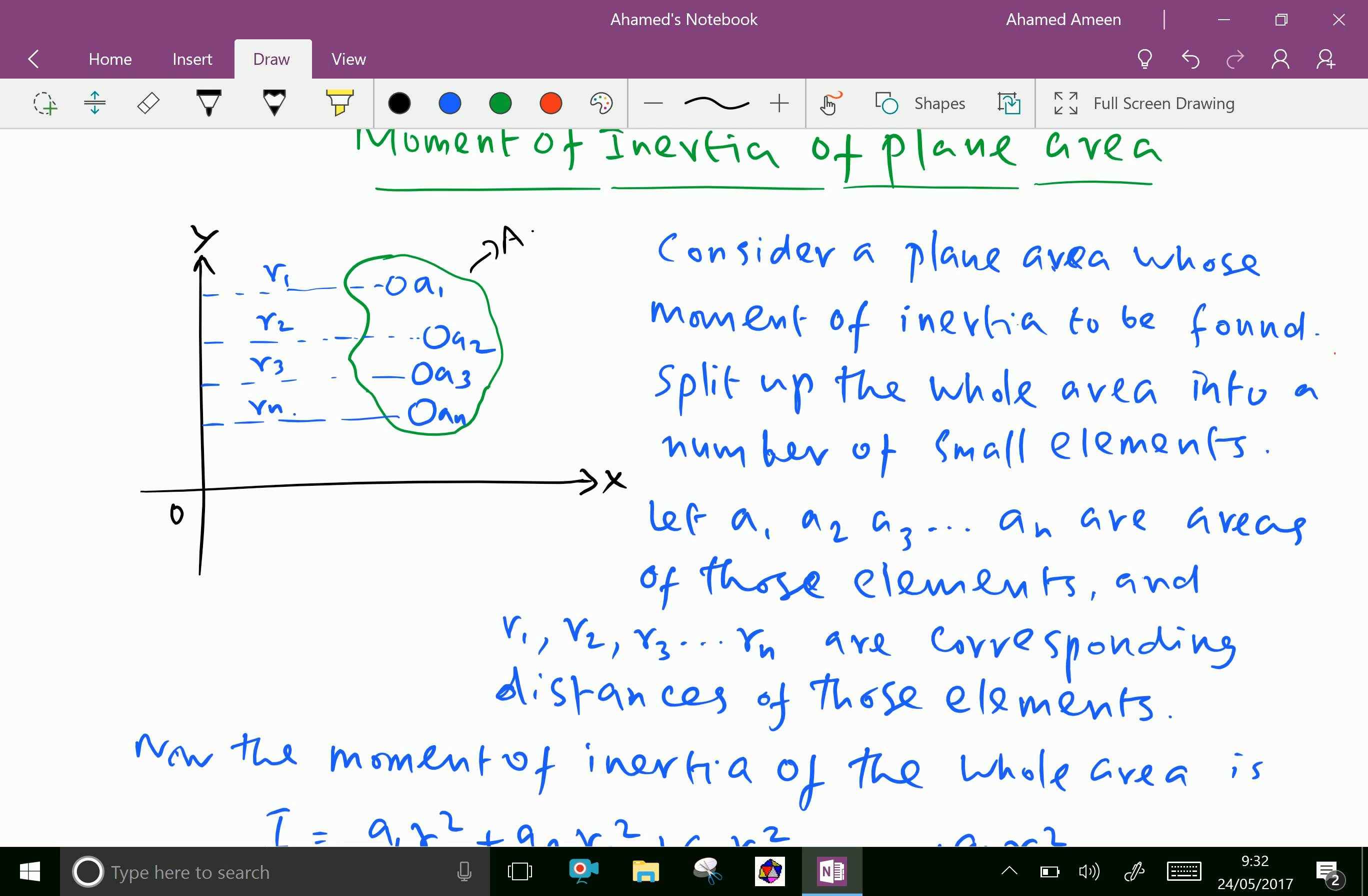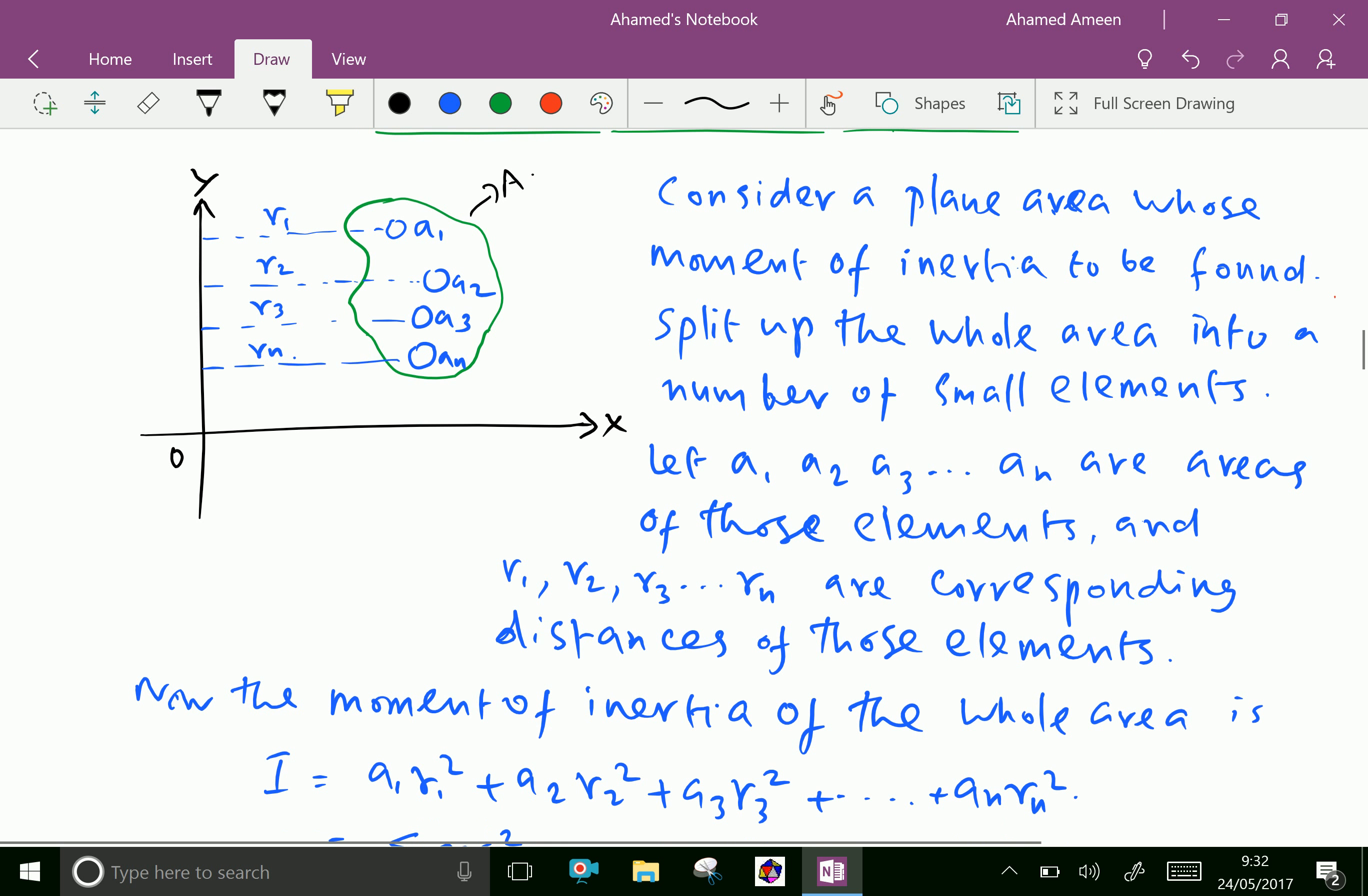Let those areas are A1, A2, A3 and An are areas of those elements. And consider from y axis, those areas are R1, R2, R3 and at Rn distances from that fixed axis.